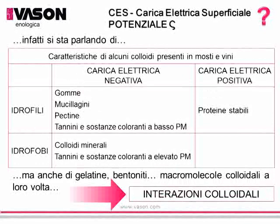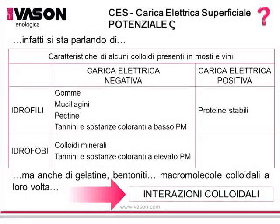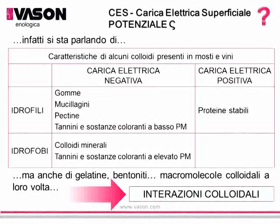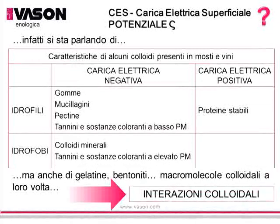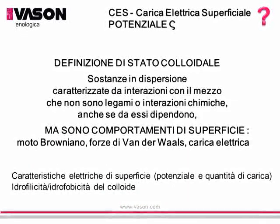This is an incomplete list of substances, divided as to whether they are negatively or positively charged, and based on whether they are hydrophilic or hydrophobic — and so, the way they respond to a hydro-alcoholic environment such as must and wine. This list should also include other sorts of gelatines, bentonites, and colloidal macromolecules, and all substances that have this kind of behavior.